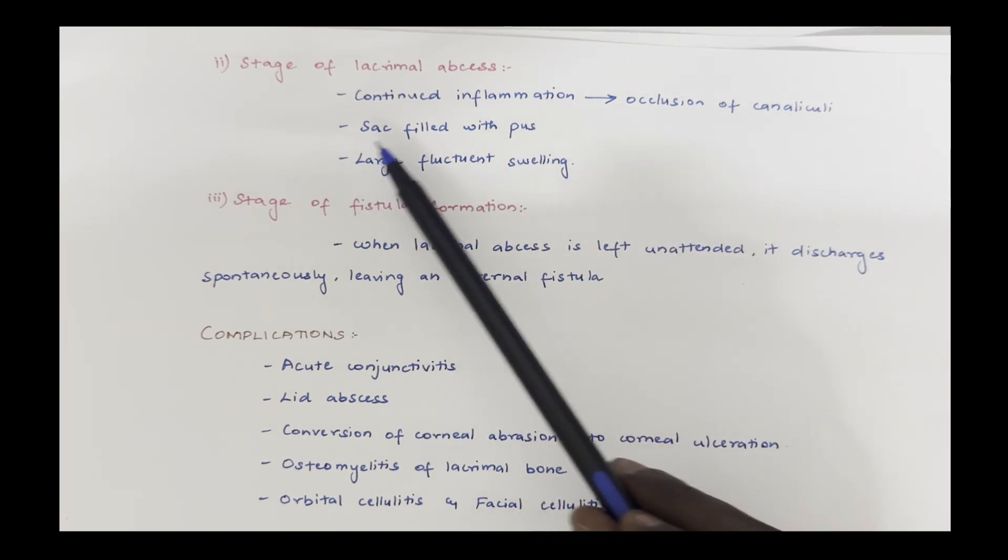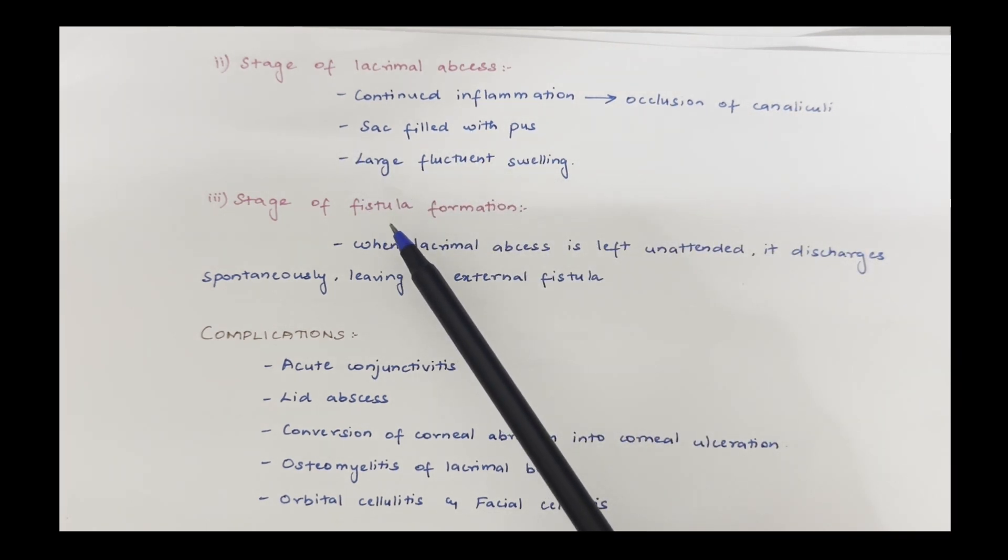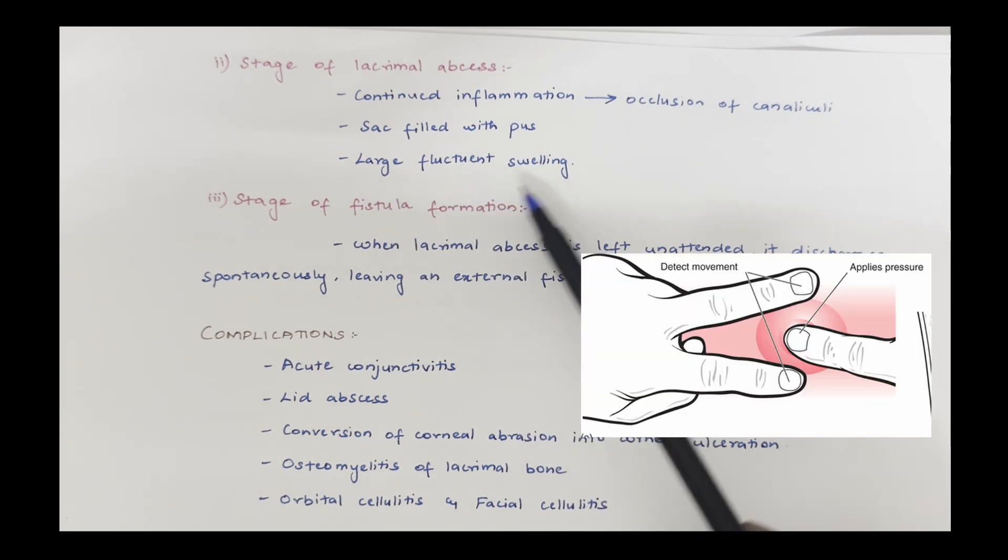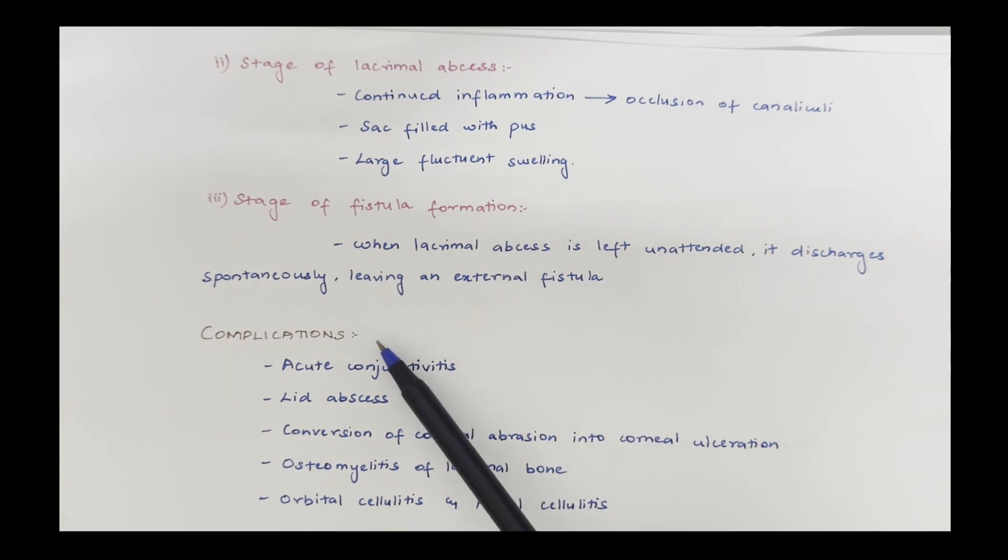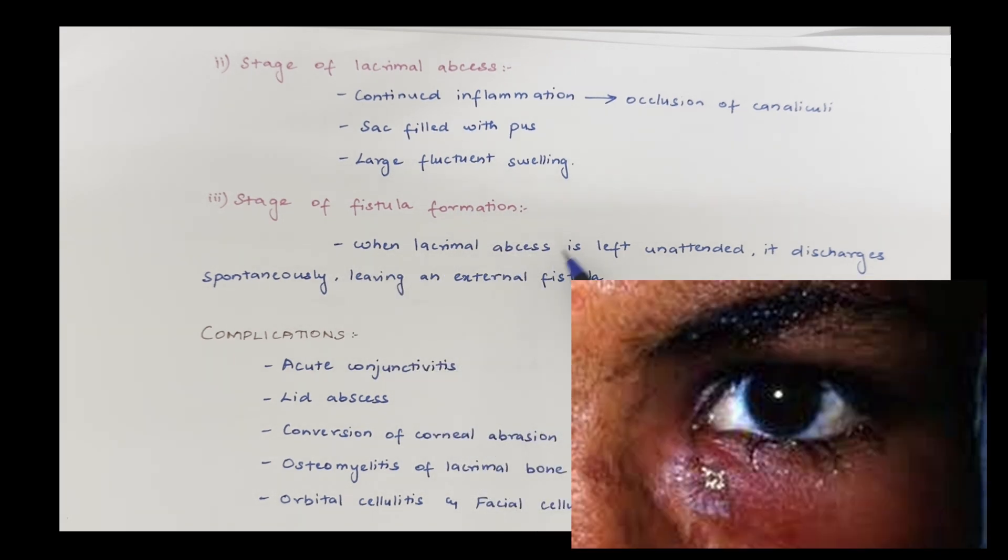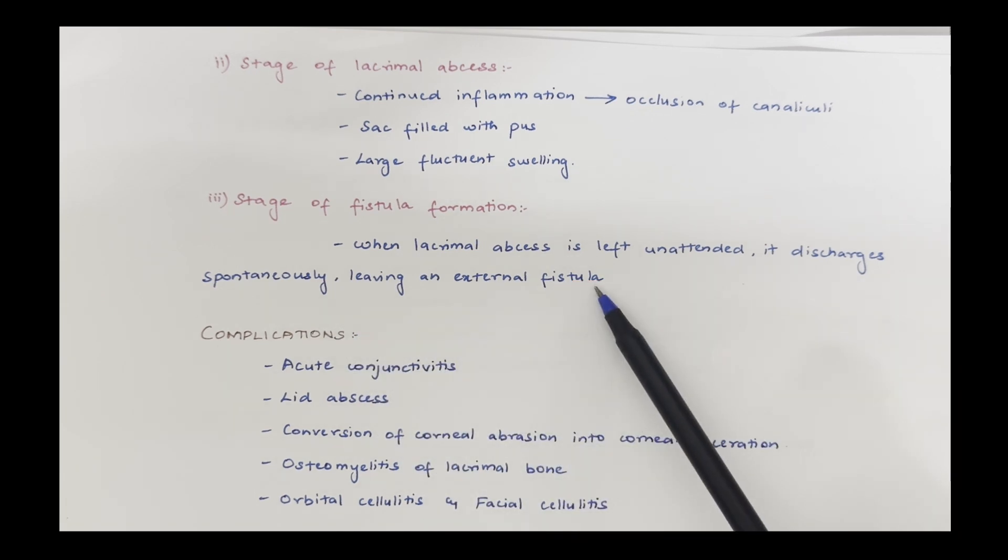Second stage is the stage of lacrimal abscess. Continued inflammation leads to occlusion of canaliculi. In this stage the sac is filled with pus and there is large fluctuant swelling. The third stage is the stage of fistula formation. When lacrimal abscess is left unattended, it discharges spontaneously leaving an external fistula.